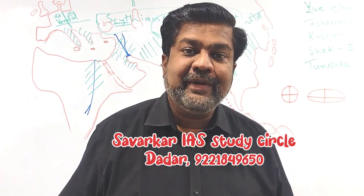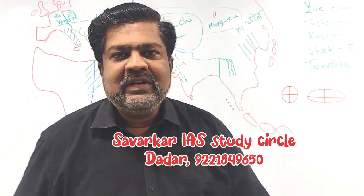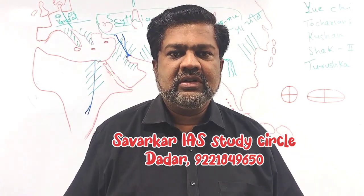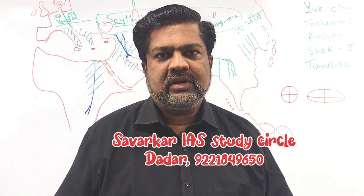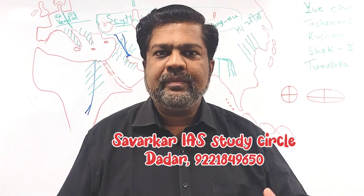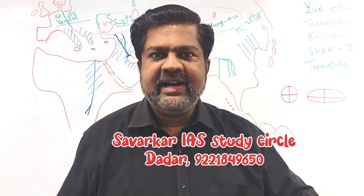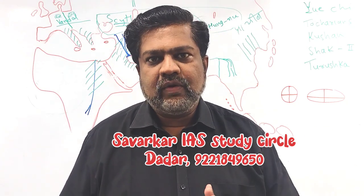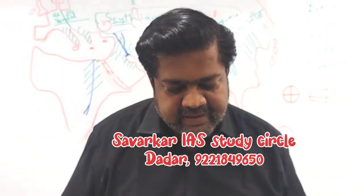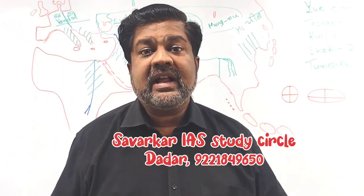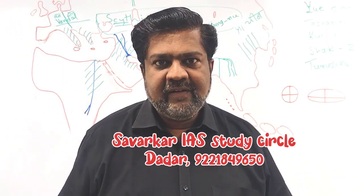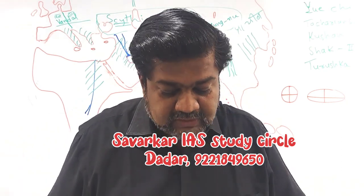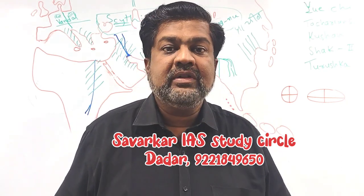Second statement: 10 decimeters is greater than 1 meter. The prefix 'deci' means one-tenth, so 1 decimeter is one-tenth of a meter. Therefore 10 decimeters equals 1 meter — it cannot be greater than 1 meter. So the second statement is also false. Both statements are false, so the answer is option D.